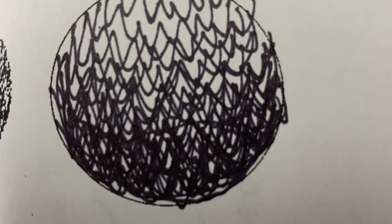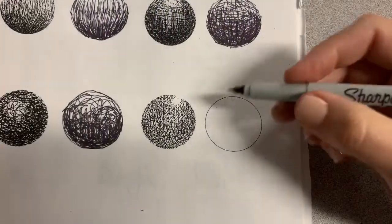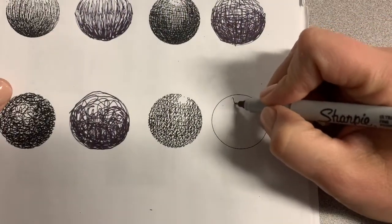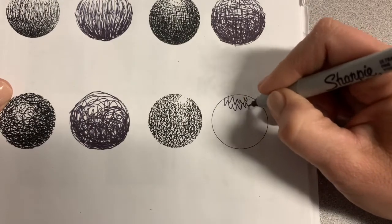The last texture technique that we're going to label and practice is called wavy lines. Wavy lines looks very similar to the scribble technique, but the difference is the uniformity of the wavy lines.